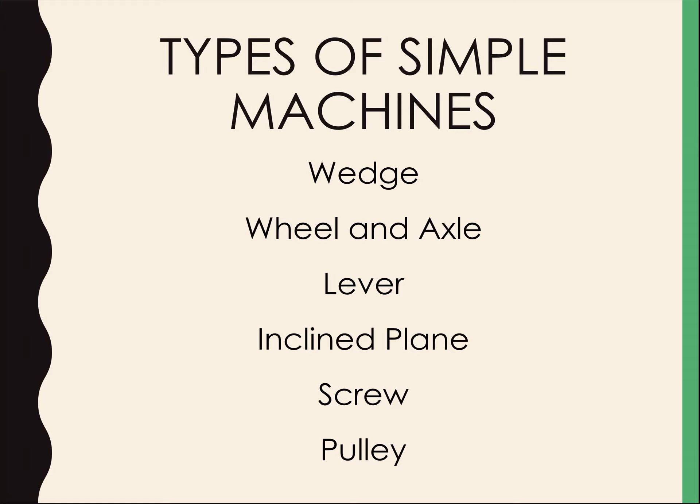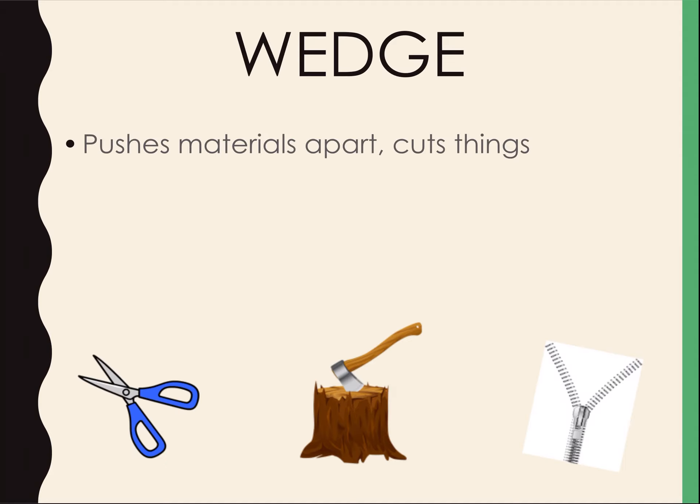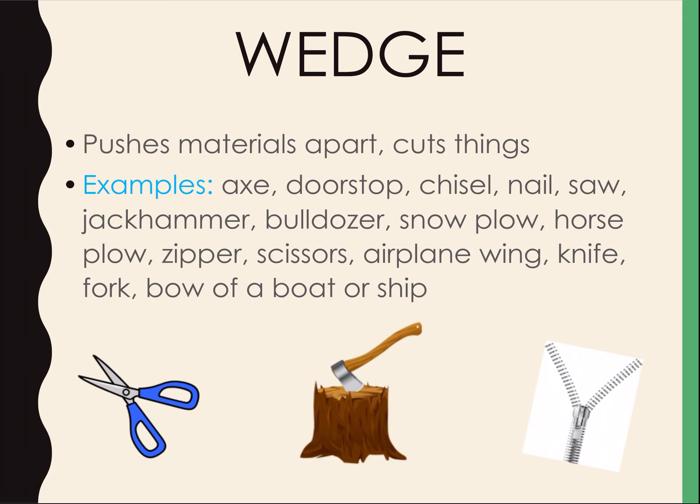We have our wedge, wheel and axle, lever, incline plane, screw, and pulley. The first one is our wedge. A wedge pushes materials apart or it can cut things. Some examples include scissors, an axe, knives, and forks — those can also be used as a wedge. A doorstop is another example: even though it's not cutting things, it has the shape of a wedge. Zippers and a bulldozer are also good examples of a wedge.